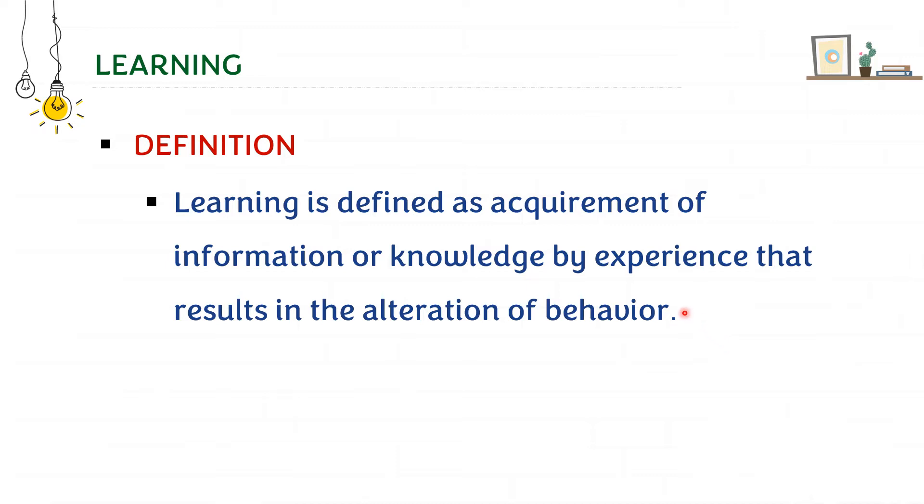One thing we have to remember is when we say learning from a physiological point of view, it is not just us reading the textbook or that sort of learning. It means the learning which will be easier to understand from the point of view of animals. We know that our dogs or pet cats learn a lot of things. That is why we say that learning is defined as acquirement of information or knowledge by experience that results in the alteration of behavior. That is very important.